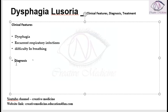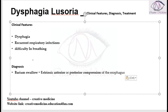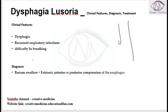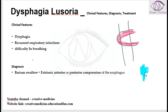For the diagnosis of dysphagia lusoria, one important thing is to do a barium swallow. In the barium swallow, you will see an extrinsic anterior or posterior compression of the esophagus. If the esophagus is compressed by a vascular anomaly, this part will appear kinked on barium swallow, while the segments above and below remain normal. This kinking or compression mark can occur anteriorly or posteriorly depending upon the site of compression.